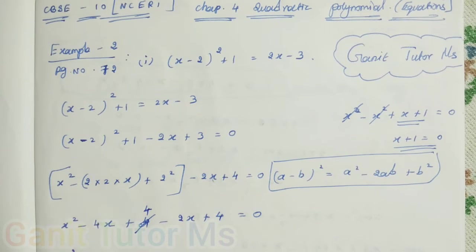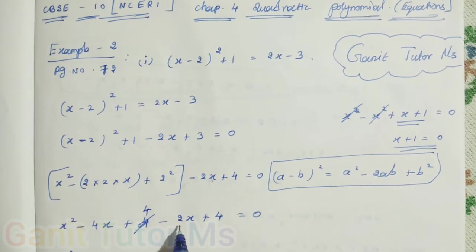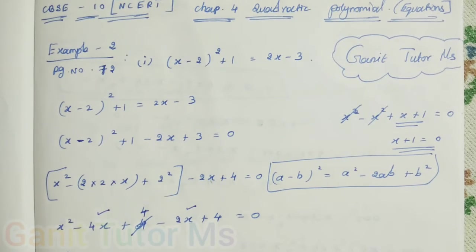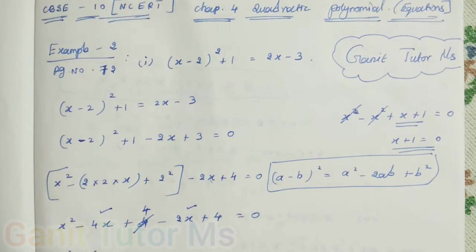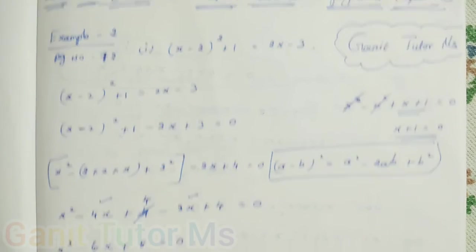So, now, x squared minus 4x. Here, minus 2x. So, minus 4x minus 2x. Same sign. You can add it. 6x plus 4 plus 4. So, plus 8 which is equal to 0.